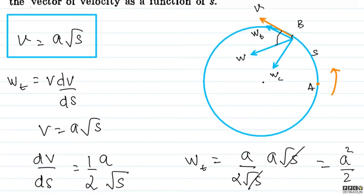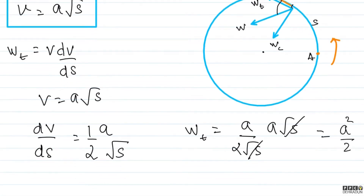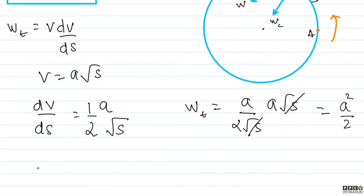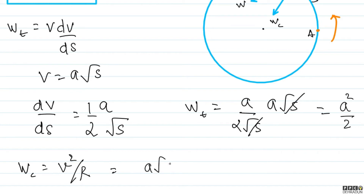As we showed, Wt (tangential acceleration) should be along the direction of speed. So Wt = v·dv/ds = a√s · a/(2√s) = a²/2. This means speed is increasing. Now, Wc (centripetal acceleration) = v²/R. Substituting v = a√s, squaring and dividing by R gives Wc = a²s/R.